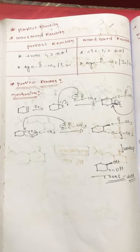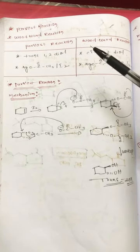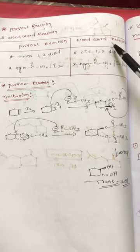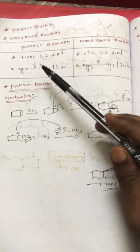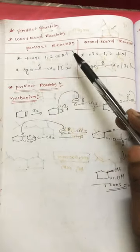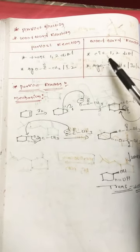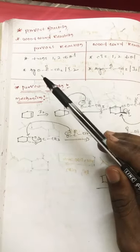In this video, I'm giving a small difference between the Prevost reaction and the Woodward reaction. The Prevost reaction gives trans-1,2-diols, while the Woodward reaction gives cis-1,2-diols.